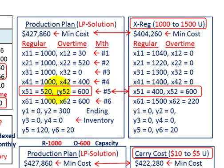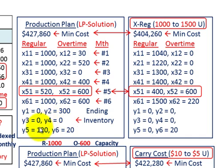In that last month we're producing max 1,000 units for regular capacity and 600 in overtime. For ending inventory: month one, y1 is zero; month two, 300 units; months three and four, zero units; month five, 120 units. And for month six, we had to have at least 20 units — and we get exactly 20 here. That's our linear program solution.